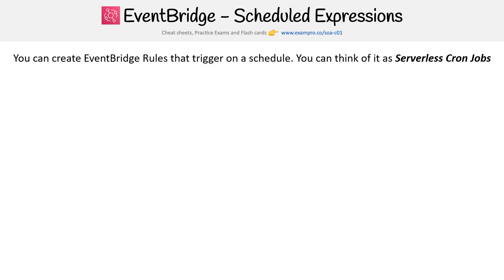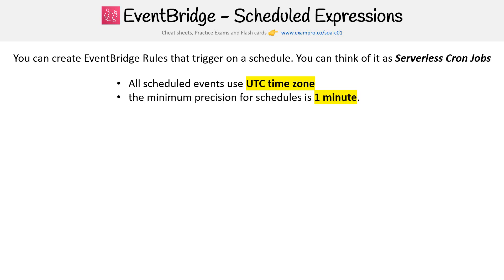Let's take a look at schedule expressions for Amazon EventBridge. You can create an EventBridge rule that's triggered on a schedule — think of it as a serverless cron job. All scheduled events use the UTC time zone, the minimum precision for schedules is one minute, and EventBridge supports cron expressions and rate expressions.